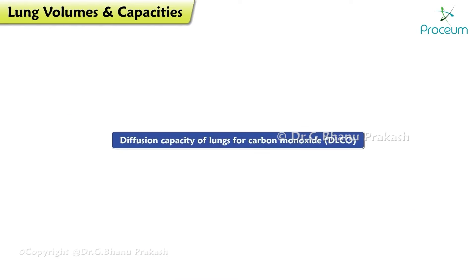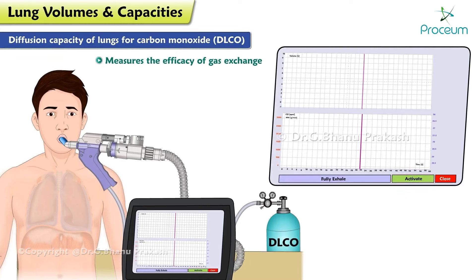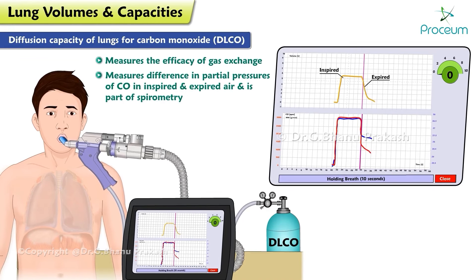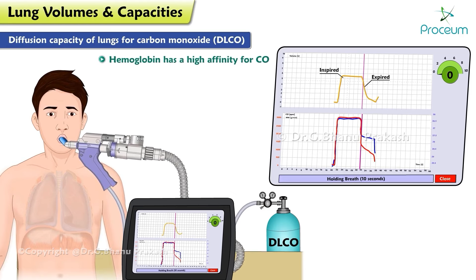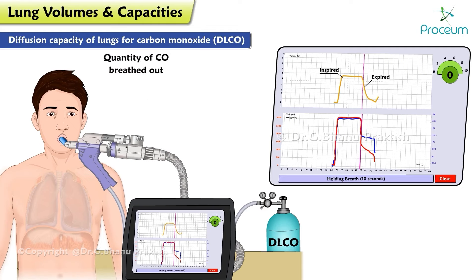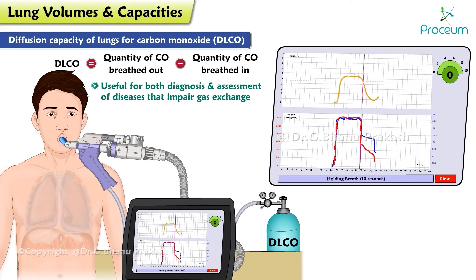Diffusion capacity: the diffusion capacity of the lungs for carbon monoxide (DLCO) is a pulmonary function test that measures the efficacy of gas exchange. This measures the difference in the partial pressures of carbon monoxide in inspired and expired air, and is part of spirometry. Because hemoglobin has a high affinity for carbon monoxide, it can be assumed that the difference between inspired and expired carbon monoxide is the amount that diffuses into the blood. The quantity of carbon monoxide that the patient breathes out is subtracted from the amount breathed in, and the resulting value is used to calculate DLCO, which is used to estimate the diffusion capacity of oxygen. This testing is very useful for both diagnosis and assessment of diseases that impair gas exchange.